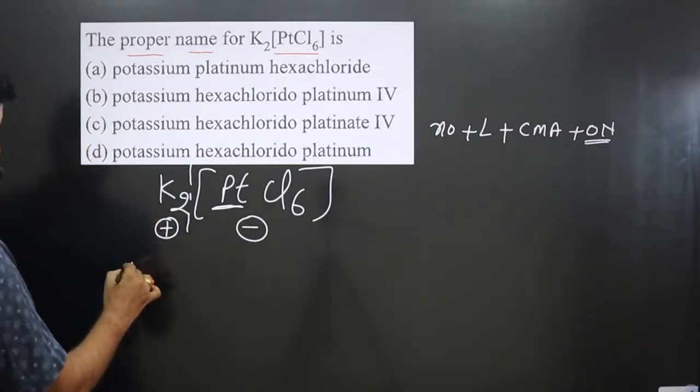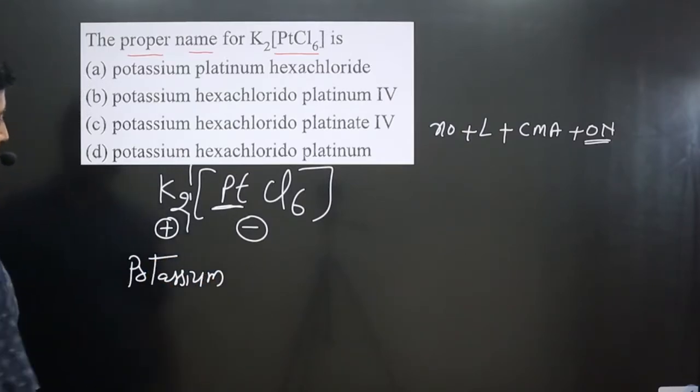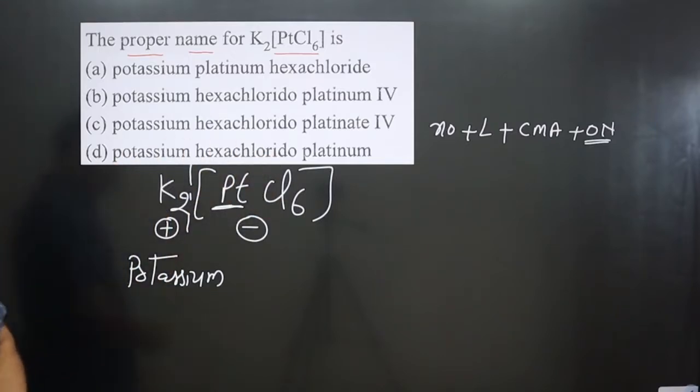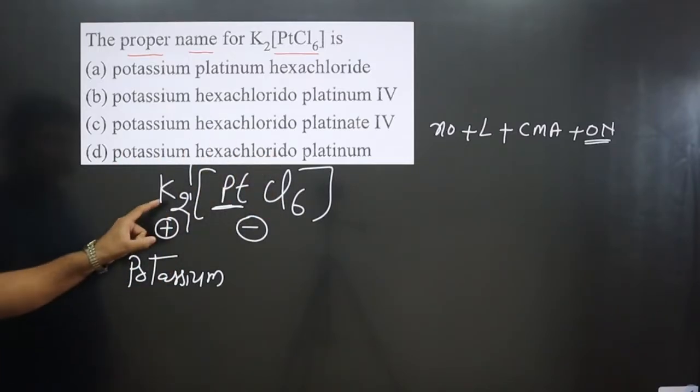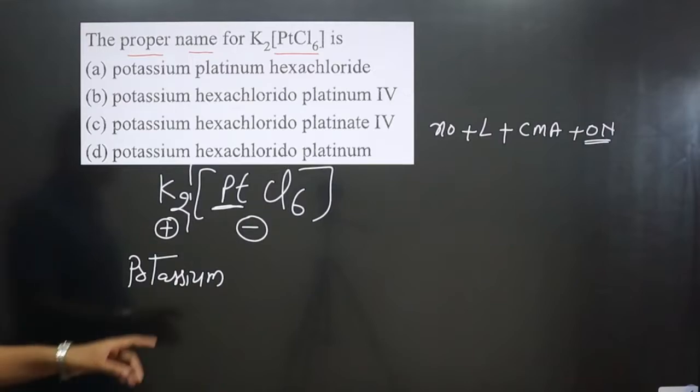First of all, we can name the counter ion. The counter ion is potassium. We should not write it as di-potassium. We are getting two by balancing the charge of cationic as well as anionic part. By balancing the charge, we write only the common name for the counter ion: potassium. We do not include these numbers.